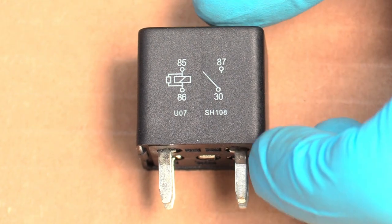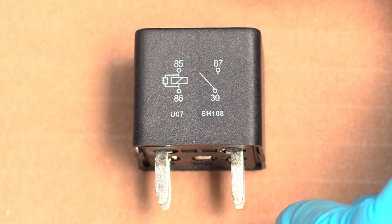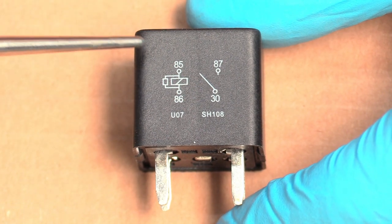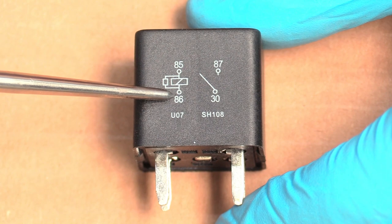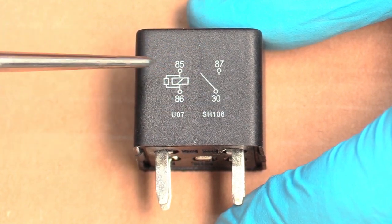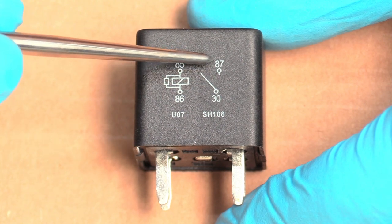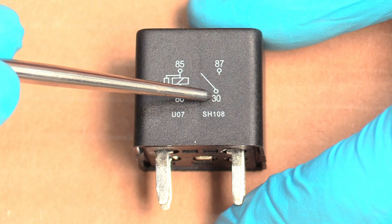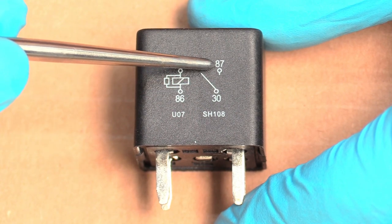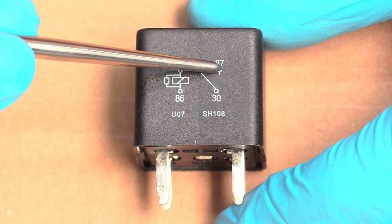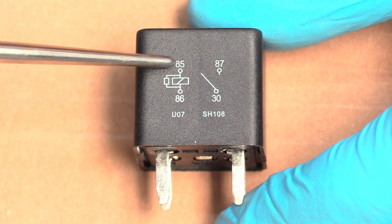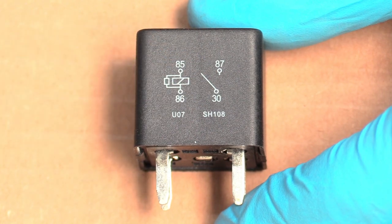So here we have our standard relay. This is your standard four post guy, the one you're going to be dealing with pretty much all the time. We have our two sides of our relay. This is our small circuit side, the power and ground for that. This is where the small electricity signal is going to come in to tell the big power side to work. Now on this relay, there aren't two grounds. A lot of people think that 87 is a ground. It isn't because it's a switch. It's another power.